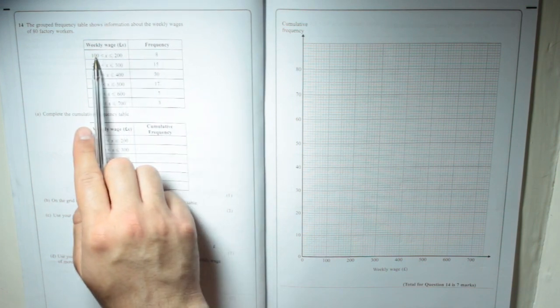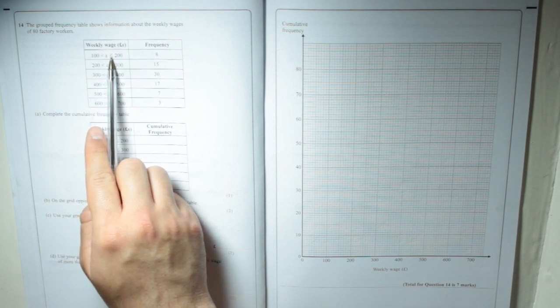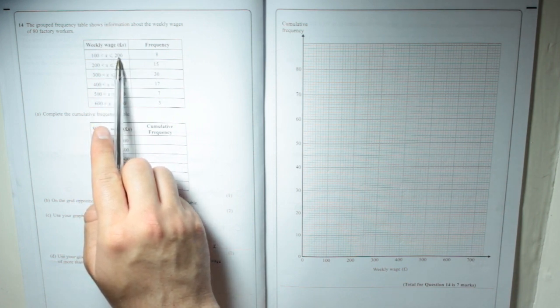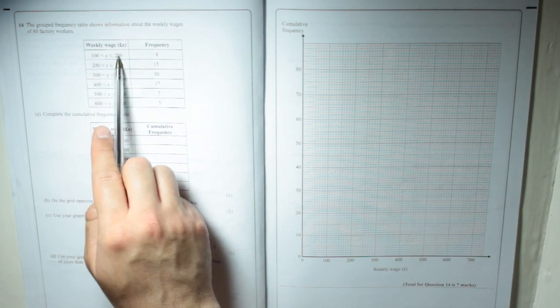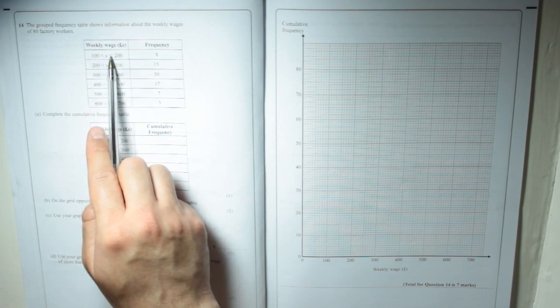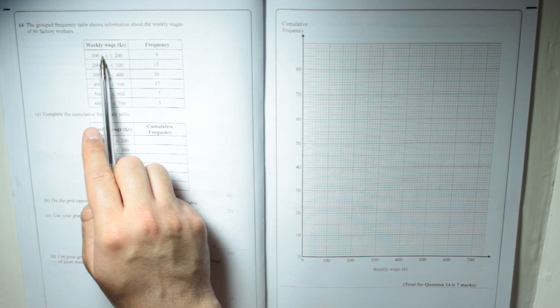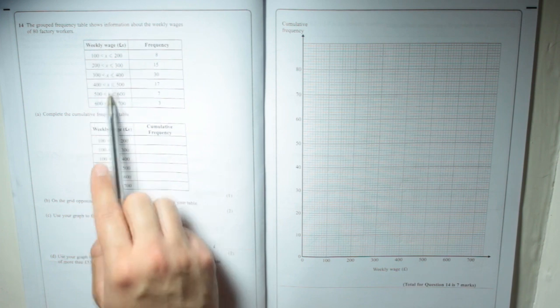This notation here, it means 100 is less than x and is less than or equal to 200. That basically means that the wage, x, is in between 100 and 200. It can't be 100 but it can be 200 because it's less than or equal to 200 but it is greater than and not equal to 100. And that's the same for all of them.